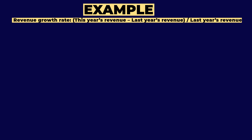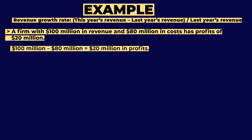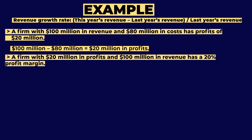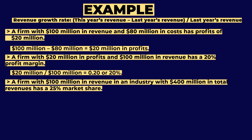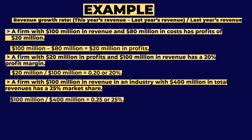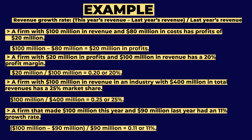Here are some examples. A firm with $100M in revenue and $80M in costs has profits of $20M. A firm with $20M in profits and $100M in revenue has a 20% profit margin ($20M ÷ $100M = 0.20). A firm with $100M in revenue in an industry with $400M total revenue has a 25% market share ($100M ÷ $400M = 0.25). A firm that made $100M this year and $90M last year had an 11% growth rate (($100M − $90M) ÷ $90M = 0.11).